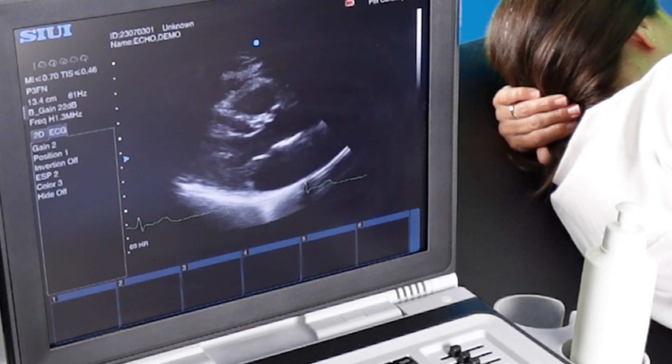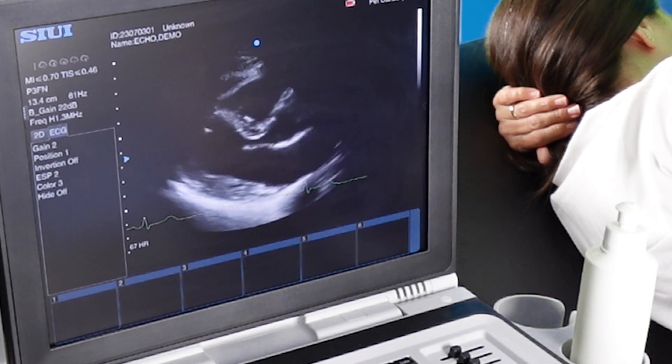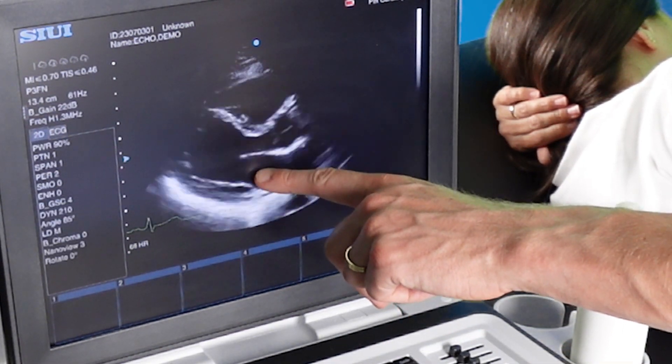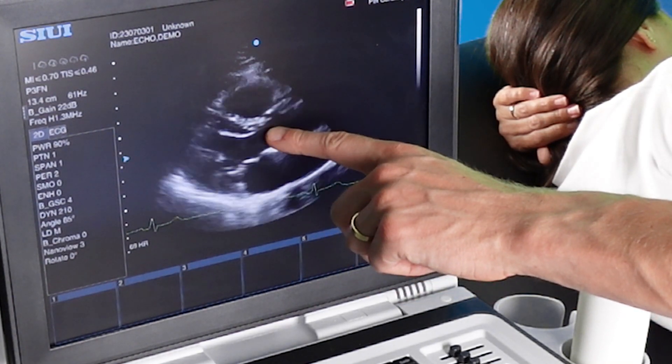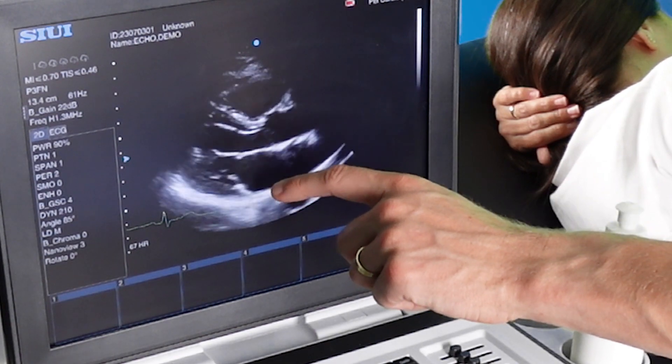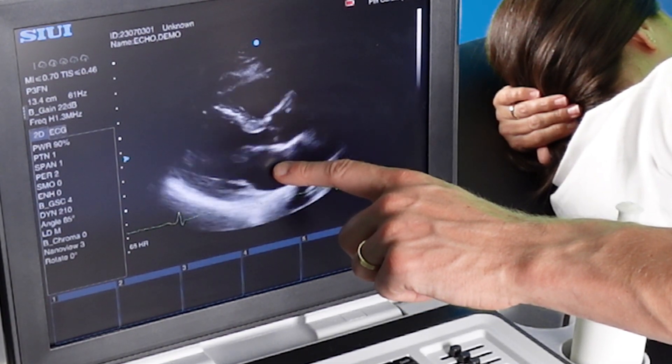Adjust your gains so that you have a nice black blood pool. You should have your mitral valve, aortic valve in view, the right ventricle at the top and the left atrium, left ventricle.